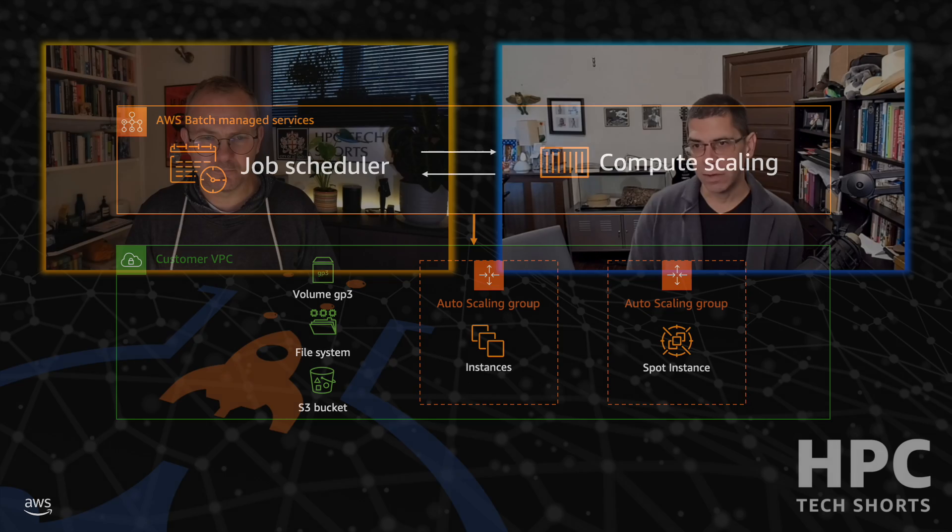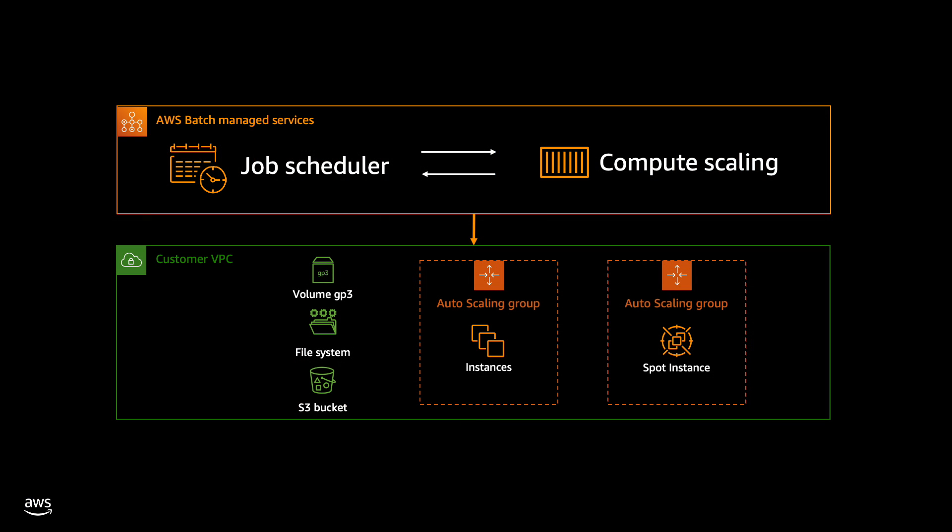There are two things running in the background on our plane: a job scheduler and a service for scaling compute based on the information coming into that scheduler. As a user, you set up your Batch environment and we set up these two managed service planes on your behalf. Once you start submitting work into that job scheduler, we reach into your VPC, into your AWS account, and start scaling the compute resources necessary for the work you provide.